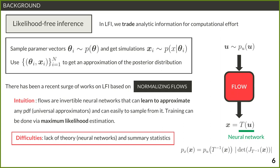Of course, when using normalizing flows you're using neural networks, so the main challenge is the lack of theory. For instance, if you want a certain quality of approximation, how many samples do you need? These are heuristics — practical questions without precise answers. We simply assume normalizing flows is a useful tool for this kind of work, and I'll show the results we obtain.